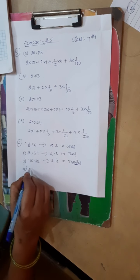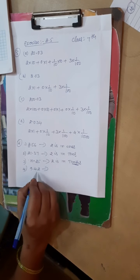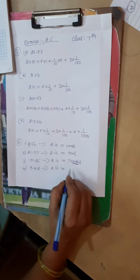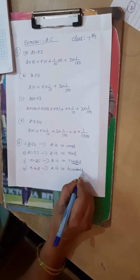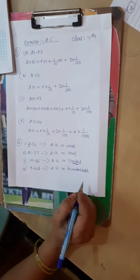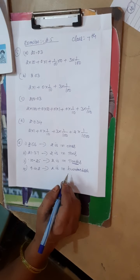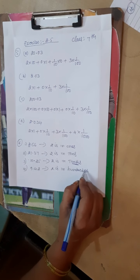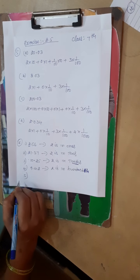Then fourth one, 9.42. Now 2 is in hundredth, H-U-N-D-R-E-D-T-H. So this is in hundredth. So what is that? Hundredth place. Hundredth, H-U-N-D-R-E-D-T-H is enough. Hundredth. Then fifth one.